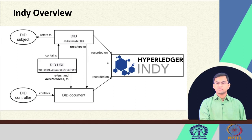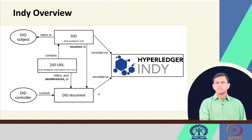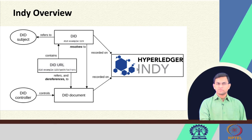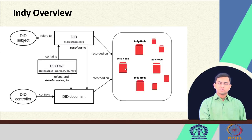What Hyperledger Indy does is that it implements a version of the verifiable data registry. Now the verifiable data registry is replaced with Hyperledger Indy. From the diagram it may seem like Hyperledger Indy is still a centralized component, but the Hyperledger Indy ledger is not a single node or single entity — instead the Indy network is composed of several Indy nodes.